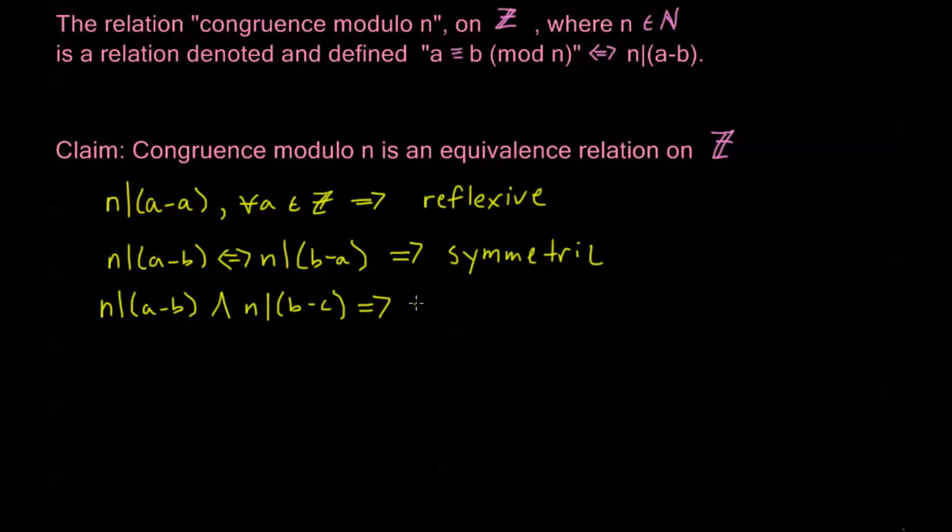But if I have this given, then that implies that a minus b is equal to some multiple of n, right? n's a divisor. So, a minus b must be equal to n times something else. And b minus c is equal to another product of n. We'll say mn. And this is for k and m. These are some integer, right? This is what it means to be a divisor.